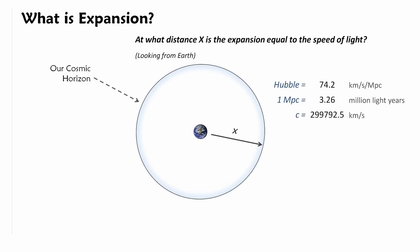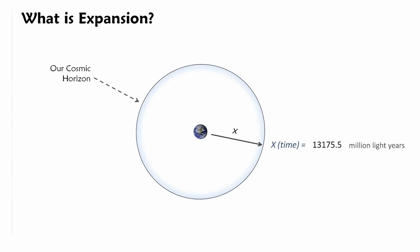With that we can calculate the distance being 13.2 billion light years. And as long as the speed of light doesn't change, this our cosmic horizon bubble is constant in size, it doesn't change.